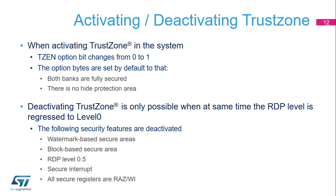The global TrustZone system security is activated by setting the TZEN option bit in the FLASH_OPTR register. By default, all flash memory is secure. When TrustZone is active, additional security features are available: secure watermark-based user options, secure hide protection areas, secure or non-secure block-based areas configurable on the fly after reset, and an additional readout protection RDP level 0.5. Erase or program operations can be performed in secure or non-secure mode. When TrustZone is disabled, these features are deactivated and all secure registers are read as 0, write ignored.